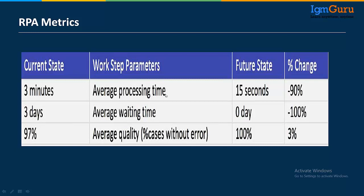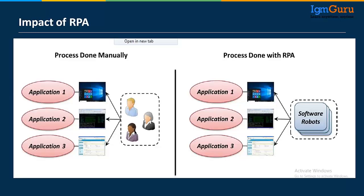Looking at the metrics: average processing time for a record — adding a customer record in Salesforce or an invoice in SAP — takes 3 minutes manually, but using RPA it can be done in 15 seconds, a 90% time reduction. Average waiting time reduces to zero days because there's no dependency on humans. Quality will be 100%. This is the impact of RPA.